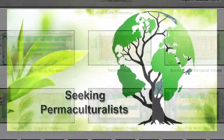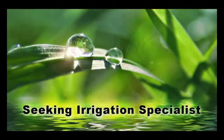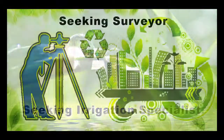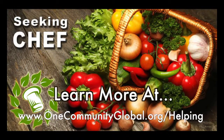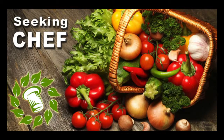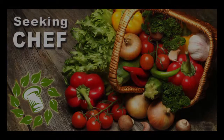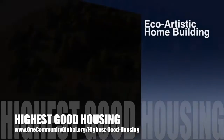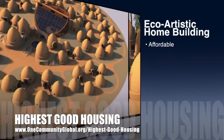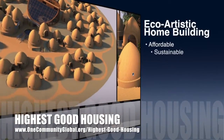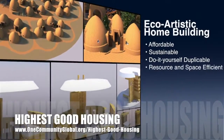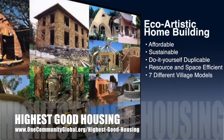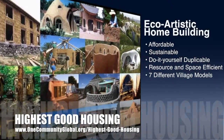In this area of our open source project, we are seeking permaculturalists, an irrigation specialist, a surveyor, and a chef to join our team as either consultants to the project or pioneers who will be moving onto the property with us. The One Community approach to Highest Good Housing is eco-artistic home building that is affordable, sustainable, do-it-yourself duplicable, resource and space efficient, and consists of seven different sustainably constructed village models.